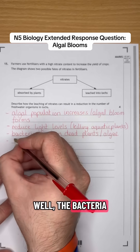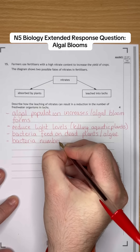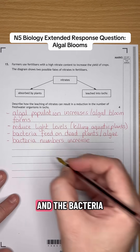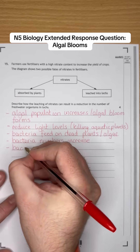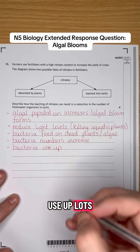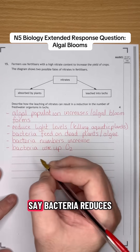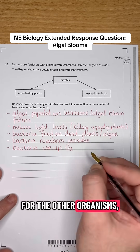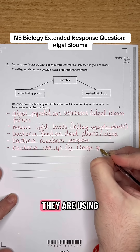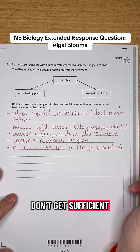What will be the result of that? Well, the bacteria numbers are going to increase, because they are getting a plentiful supply of food. And the bacteria use up large quantities of O2 — they use up large quantities of oxygen. Or you could say bacteria reduces the oxygen available for the other organisms. I'll write 'large quantities' to emphasise that they are using up so much that other organisms don't get sufficient levels of oxygen.